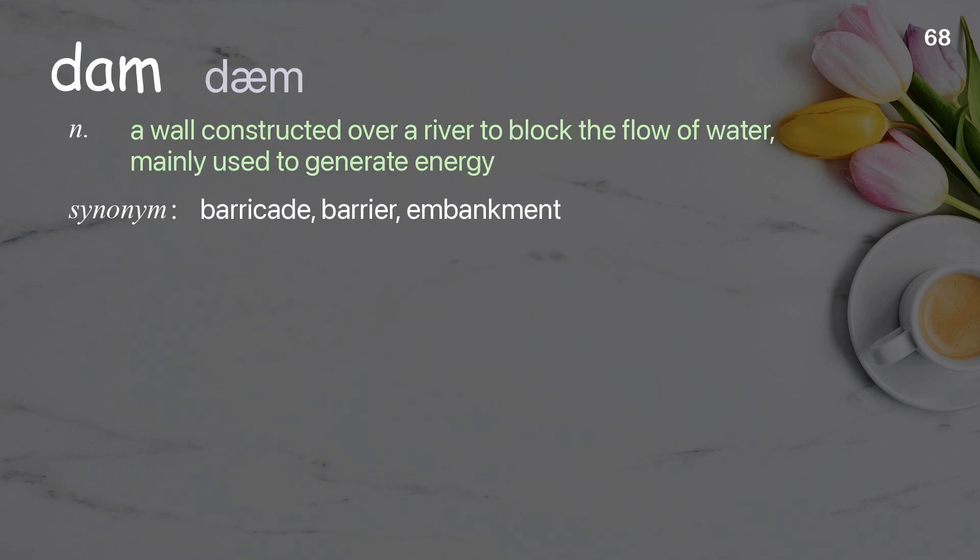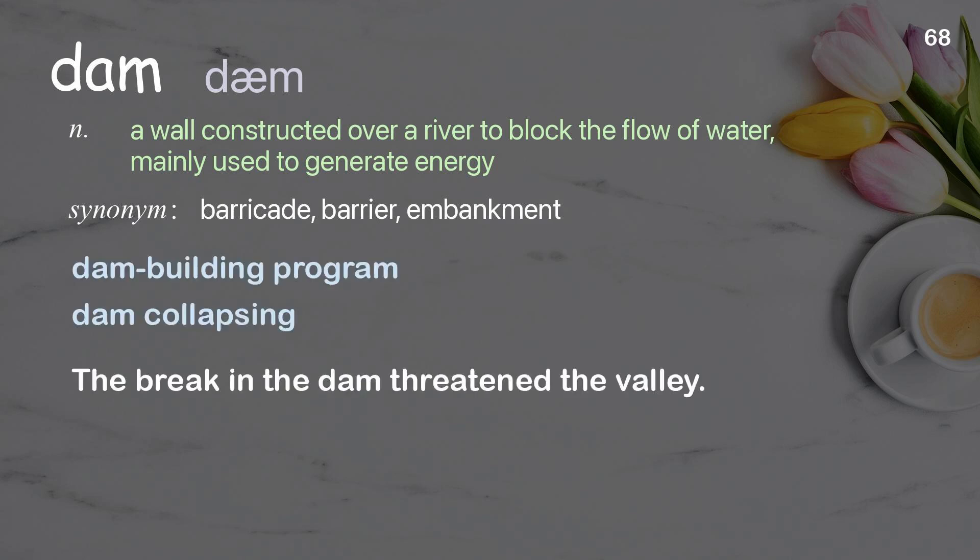Dam: A wall constructed over a river to block the flow of water, mainly used to generate energy. Examples: Dam building program. Dam collapsing. The break in the dam threatened the valley.